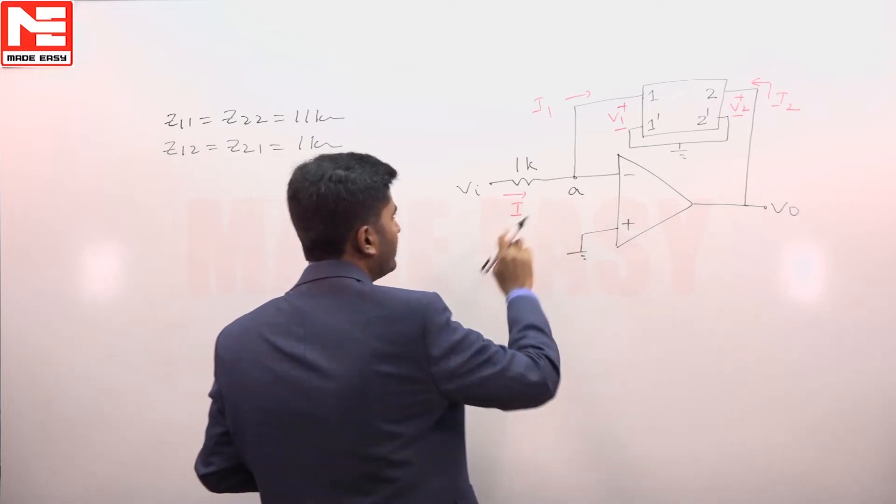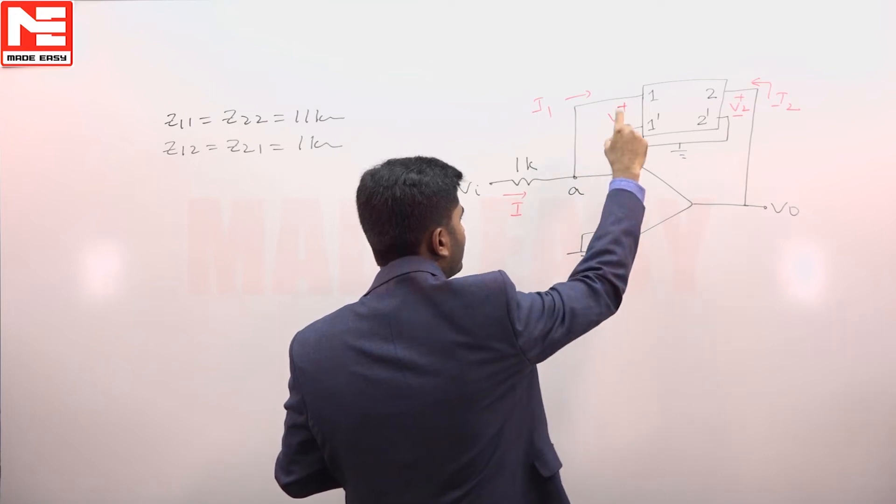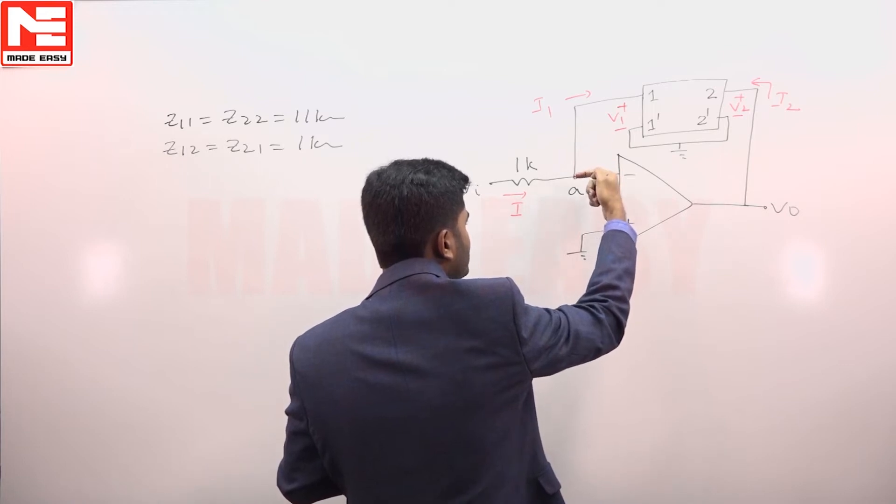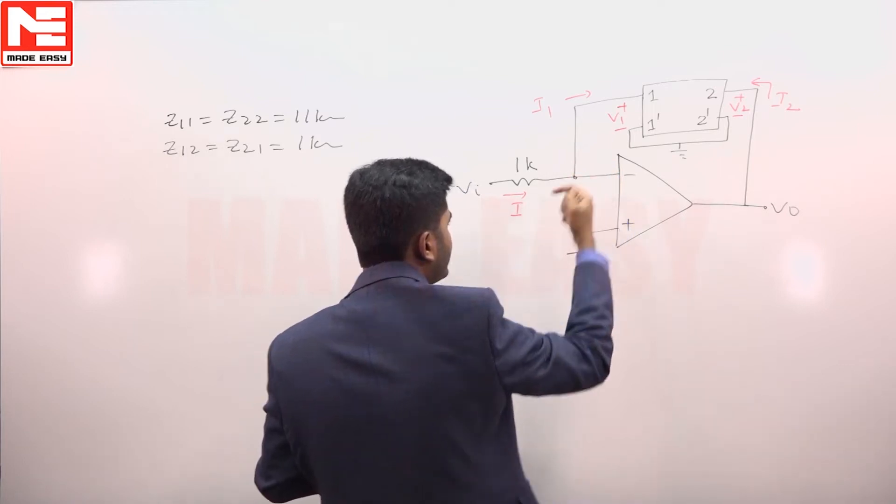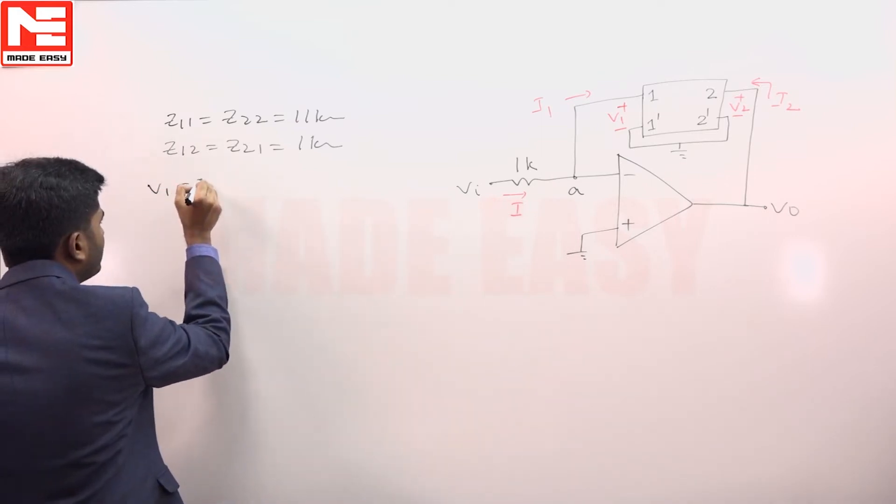And if you look at the circuit here, V a and V 1 are same. That voltage of port 1 is shown as V 1, it will be same as V a. And because V a is at virtual ground we will say V a equal to 0, V 1 equal to V a equal to 0.